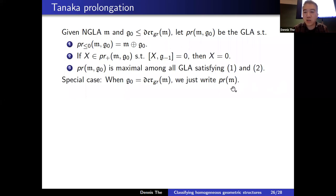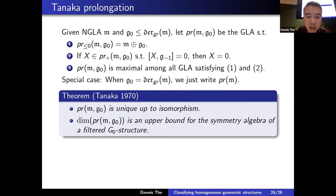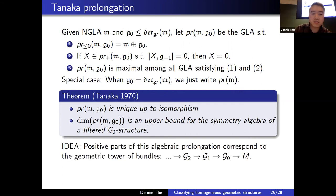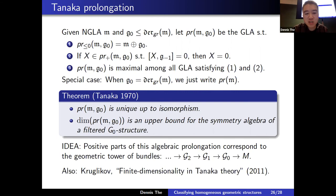The Tanaka prolongation is unique up to isomorphism. Geometrically, its dimension is an upper bound for the symmetry algebra of a filtered G₀ structure. The positive levels that appear algebraically mimic the geometric tower of bundles in the prolongation process. One can weaken the strong regularity condition — this is addressed in Kruglikov's work on finite dimensionality and Tanaka theory (2011).